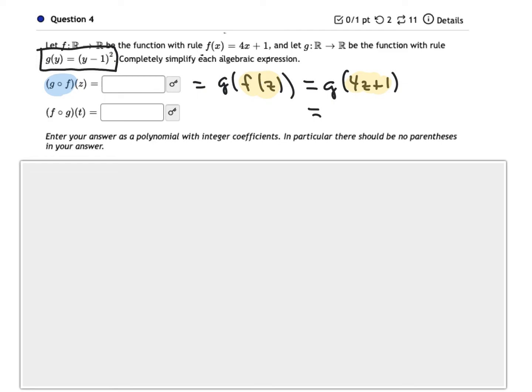And so whatever the input is for g, we're going to take that input, subtract 1, and then square it. So if my input is 4z plus 1, I'm going to subtract 1 and square it.